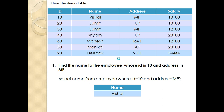We have used a demo table — our employee table in the company database — which has columns: ID, name, address, and salary. Our first question is: find the name of the employee whose ID is 10 and address is MP. According to this table, there is only one row whose ID is 10 and address is MP.